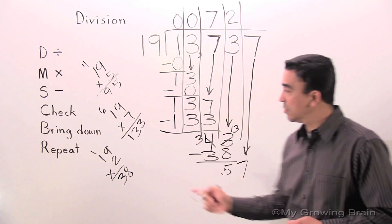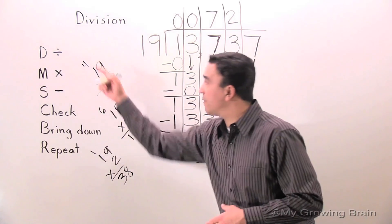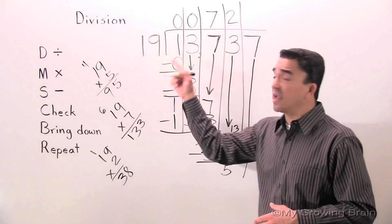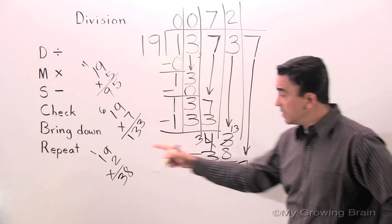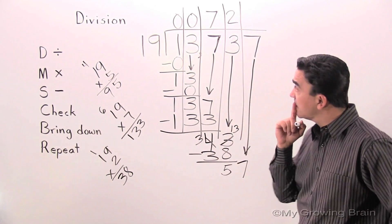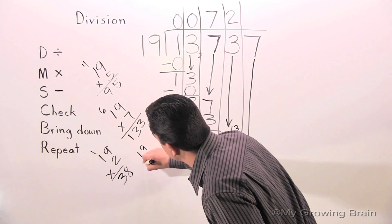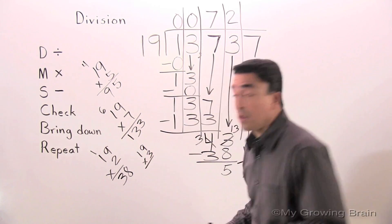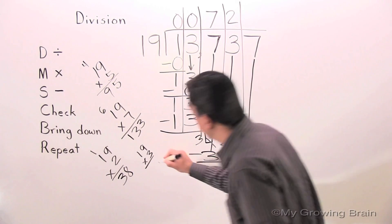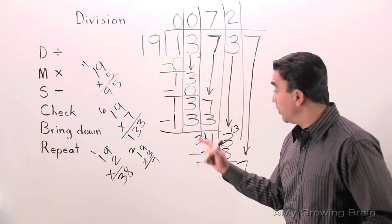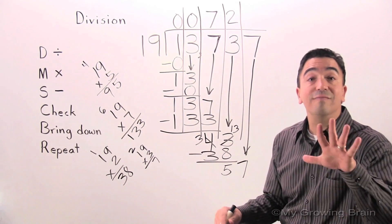57. We're going to repeat the whole process. Divide. 57 divided by 19. Or 19 into 57. I know that 19 times 2 is 38. Try 19 times 3. 3 times 9 is 27. Regroup the 2. 3 times 1 is 3. Plus 2. 5.